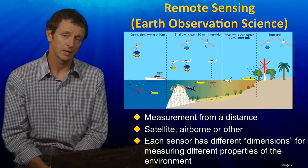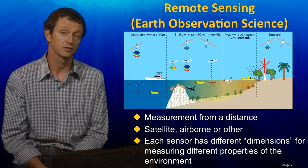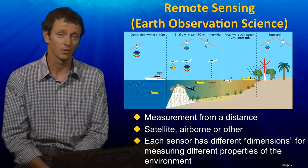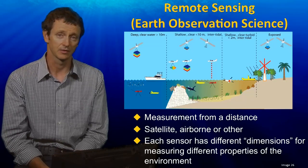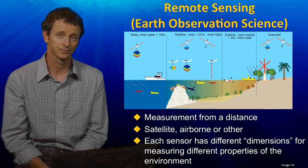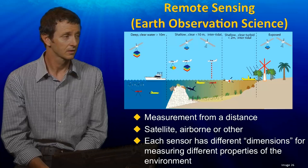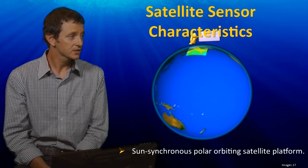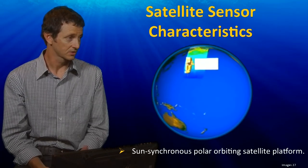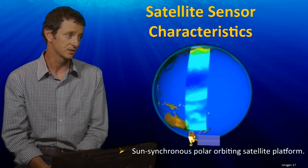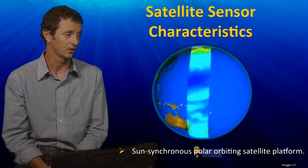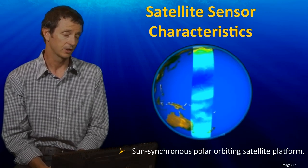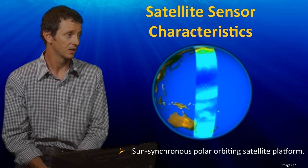Chris Rolfsner is then going to explain how those are actually transformed into maps of the environment for understanding what's there and how it's changing. One of the first controls on the type of information we get from sensors is the height they're flying at and how frequently they come back to acquire information.